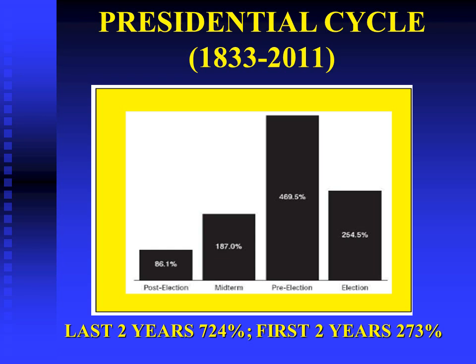Some people use this chart, which is the presidential cycle, to try to predict the potential of the market. Right after the election, the market on average went up 86.1% in the years following an election. The midterm was 187%. Clearly the third year is the most bullish year for the market, and just prior to the election it's not as bullish. So depending on where you are, there is a way of measuring the degree of bullishness.